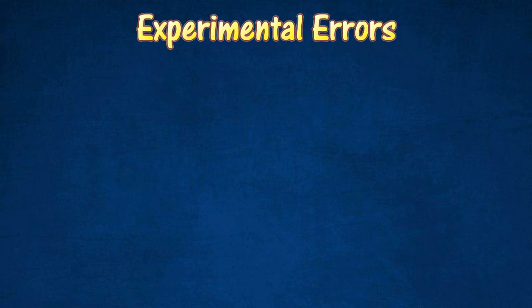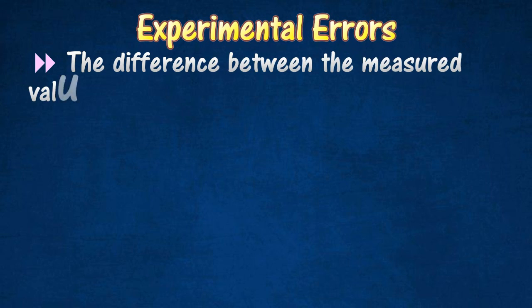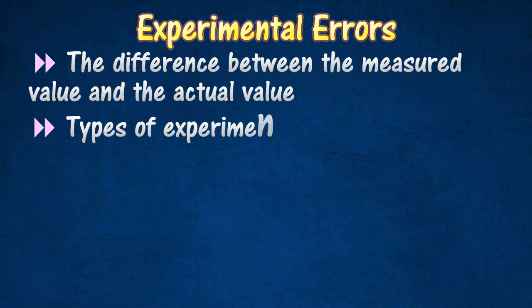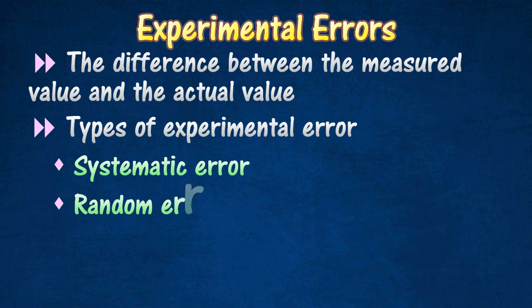Experimental Errors. An error is the difference between the measured value and the actual value. There are two main types of experimental error in measurement, namely systematic error and random error.